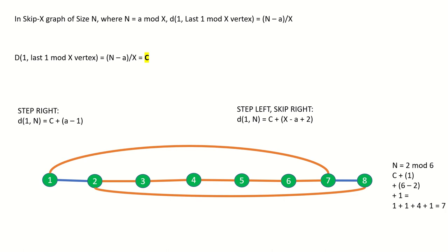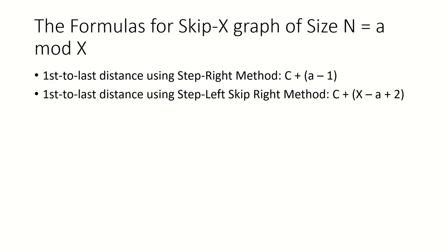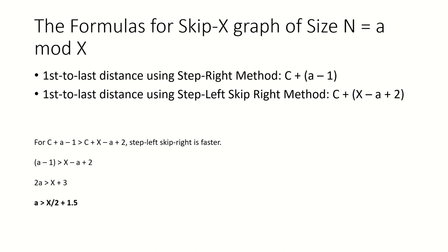Now let's create an inequality to find out where the turning point is: where c plus a minus 1 is greater than c plus x minus a plus 2, meaning the step left skip right method is faster. Let's solve this inequality now. So when a is greater than x over 2 plus 1.5, the second method — that is step left until we can skip right — is actually faster.